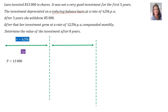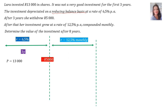After three years, she withdrew 5,000 Rand — so there on the dotted line, minus 5,000. After that, her investment grew at a rate of 12.5% per annum, compounded monthly. Determine the value of the investment after 8 years — that means the 8 years will be here. There's your 8 years.